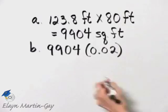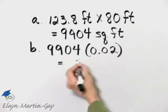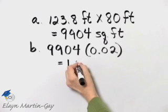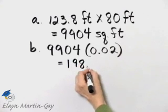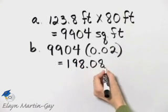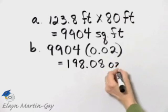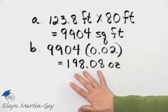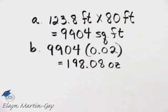Again, I'll let you multiply. Once you multiply these two numbers, you have 198.08, and that is ounces. So this is how much insecticide she needs to order.